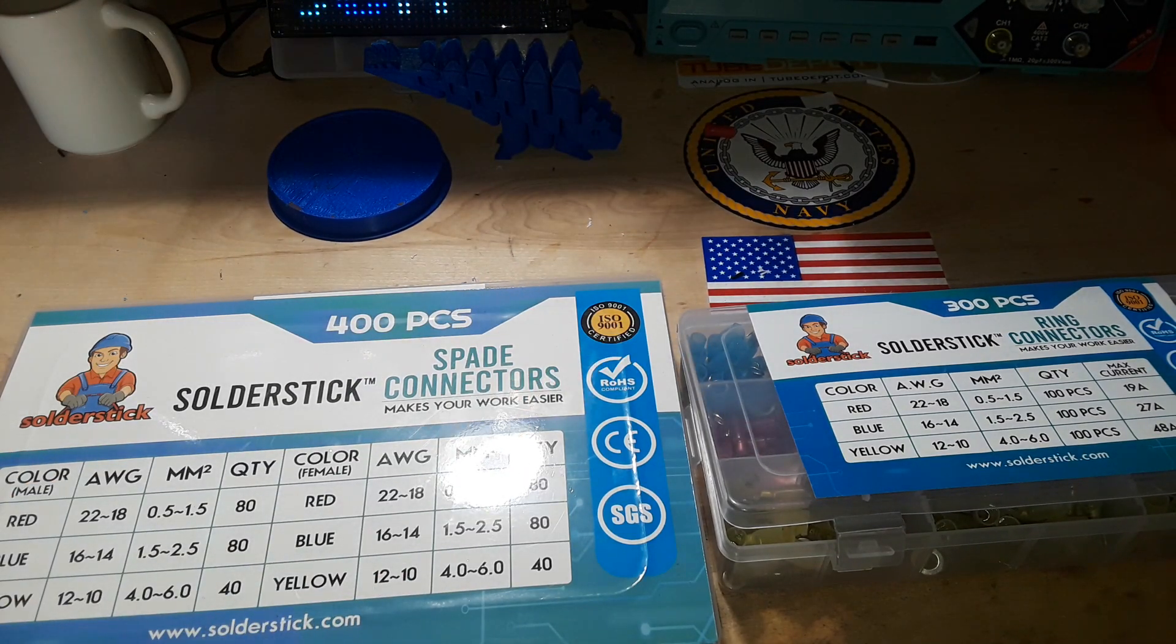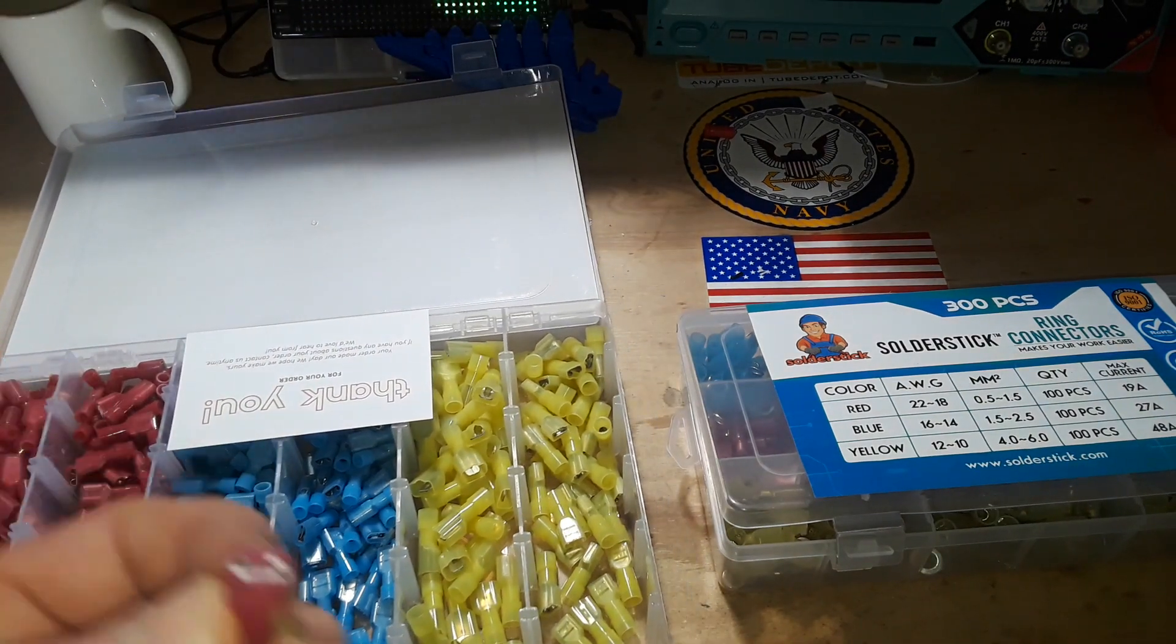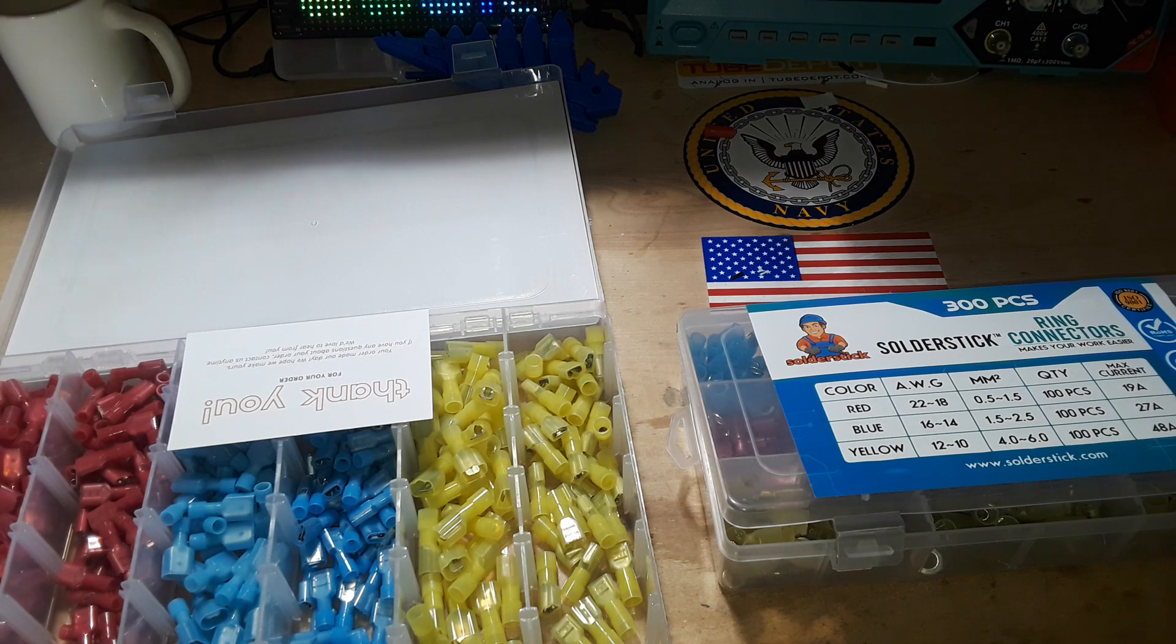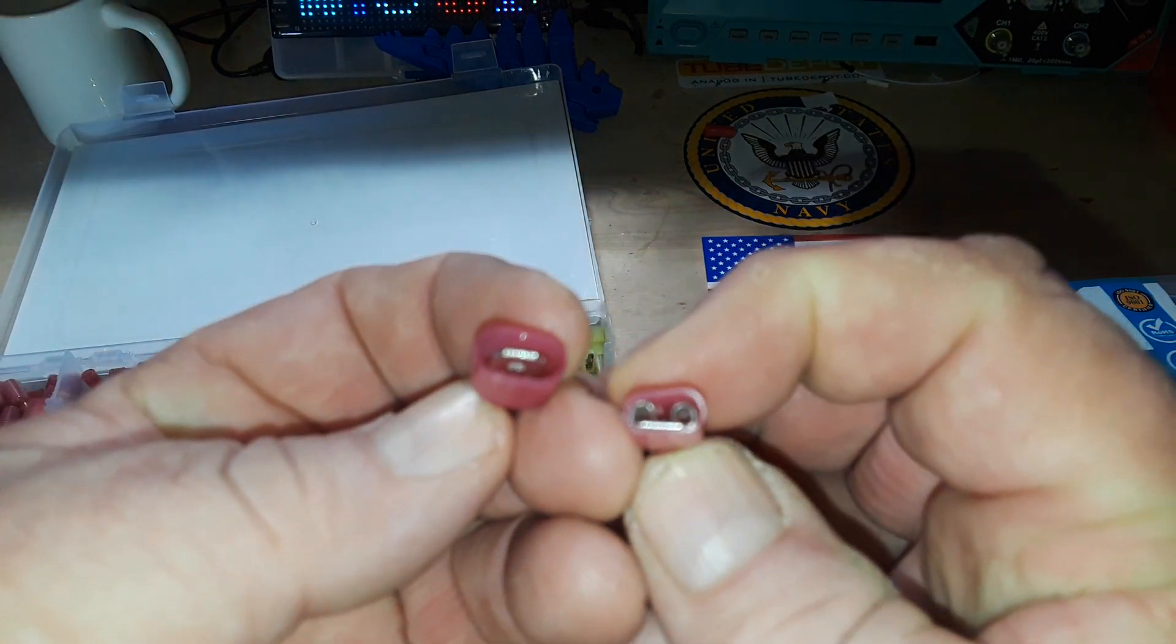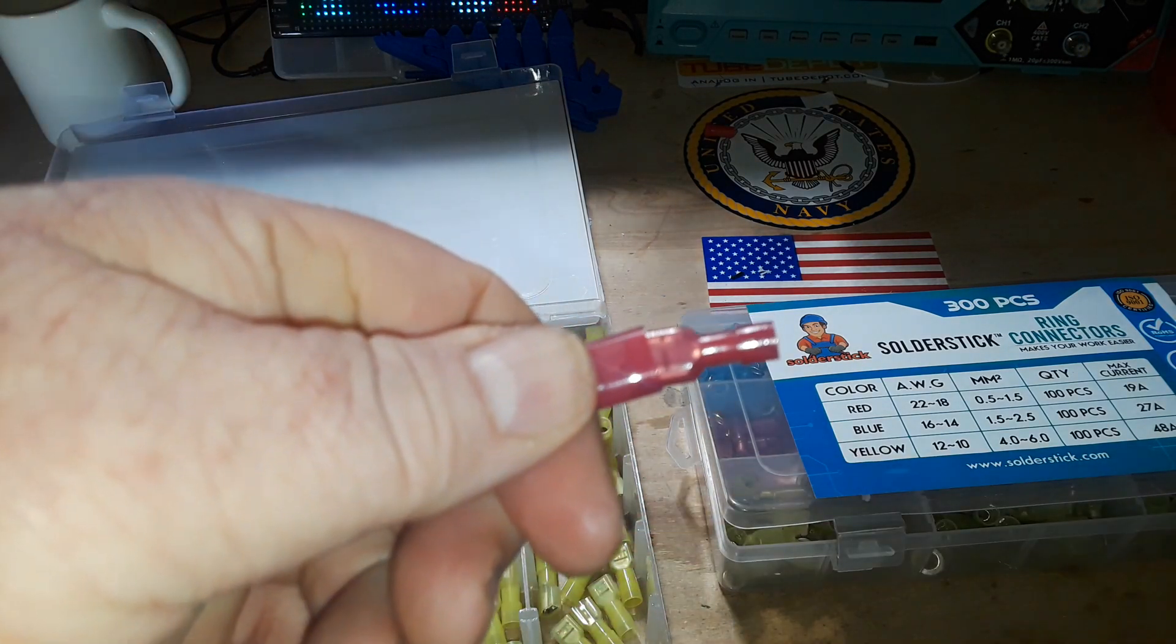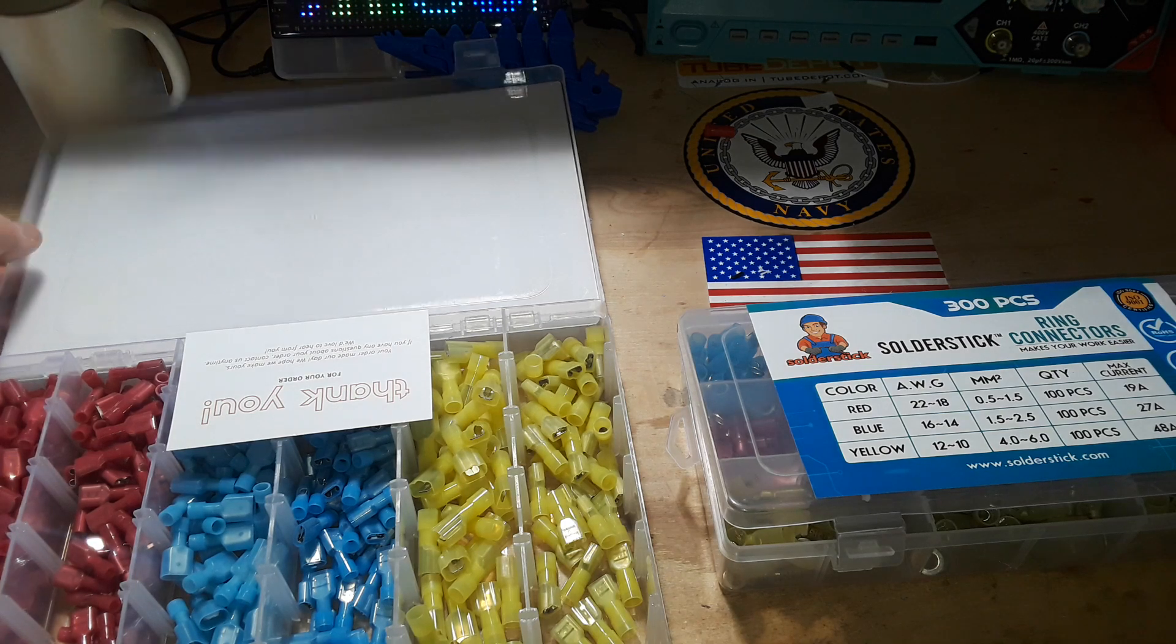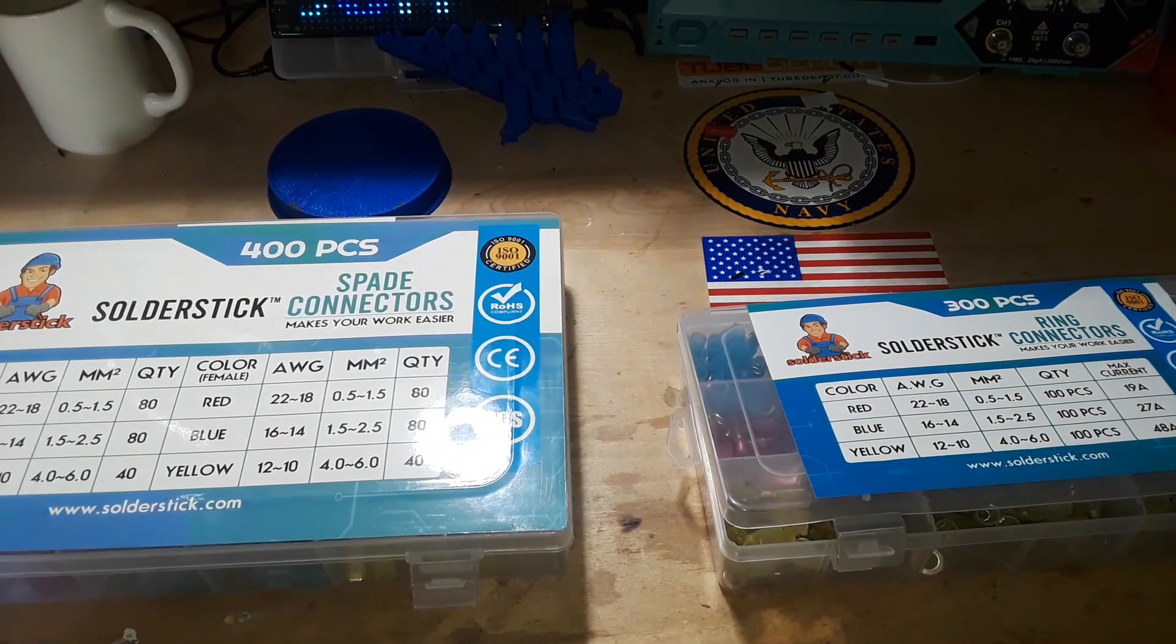But if you need something a little less permanent, it's mate connectors. We have a male and a female connector which fit together like so. You crimp those onto the ends of your wires and you look like you know what you're doing.